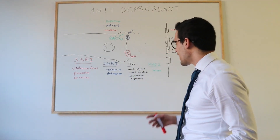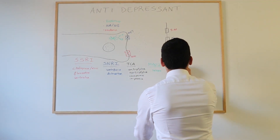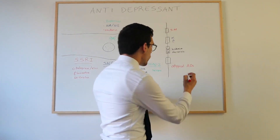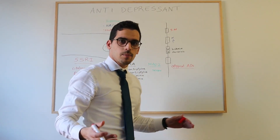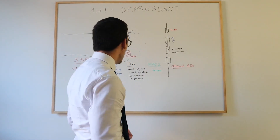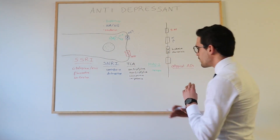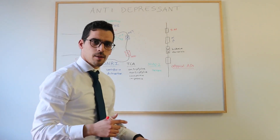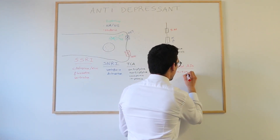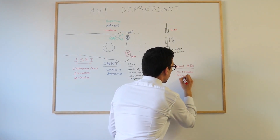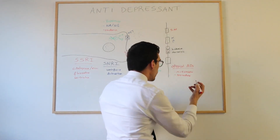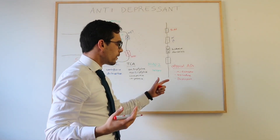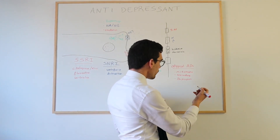Finally, the last class is the atypical antidepressants. Each drug in this class has its own mechanism of action, so a follow-up video will go into further detail comparing them. For now, some examples include mirtazapine — a tetracyclic antidepressant — trazodone, bupropion (which is mainly indicated to help with addictions such as alcohol), and lithium.